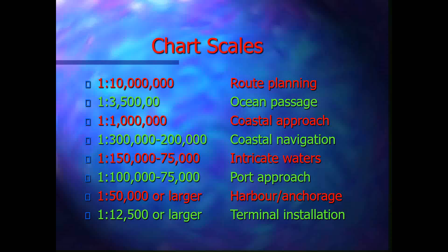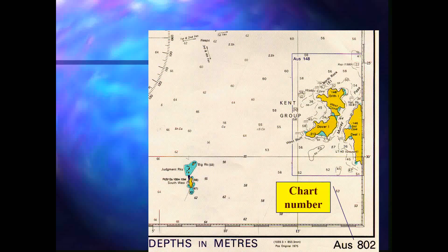The chart number is normally printed on the top left-hand corner as well as the bottom right-hand corner. In the case of Australian charts, the number is prefixed with 'AUS'. Similarly, New Zealand charts are prefixed with 'NZ', British Admiralty charts with 'BA', and charts belonging to an international series are prefixed with 'INT'.